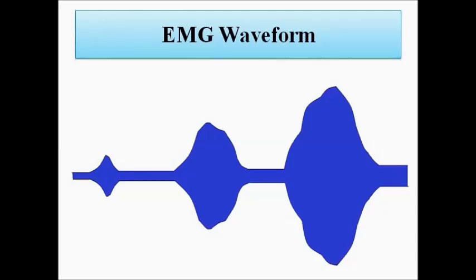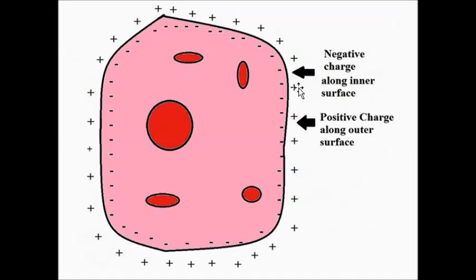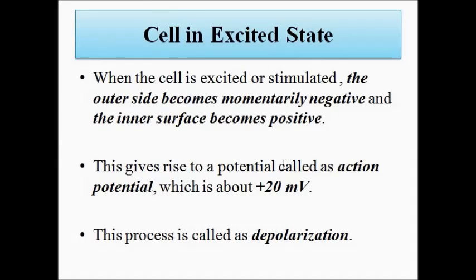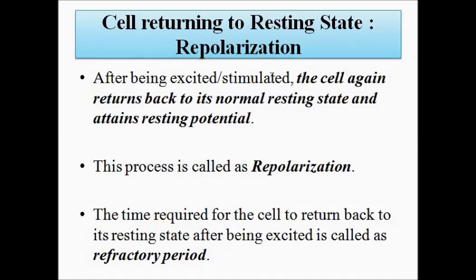To summarize the basic concepts: first, the resting behavior of skeletal muscles — the resting potential, where there is negative charge along the inner surface and positive charge along the outer surface. Then in the excited state, due to physical activity, contraction and expansion of the muscle groups results in generation of the action potential, which is the electromyogram potential. Finally, the cell returns back to the resting state, attaining the resting potential.